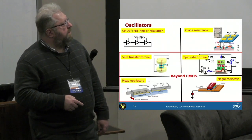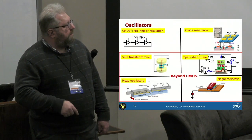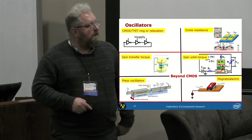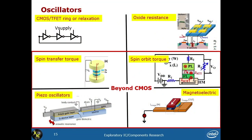Putting that all together, we look at various types of oscillators. There are CMOS-based oscillators, and most other proposed oscillators that researchers worldwide are working on are beyond-CMOS. My personal favorite is the spin-transfer torque oscillator because it's closer to commercialization. But there are various other piezoelectric and magneto-electric oscillators as well.